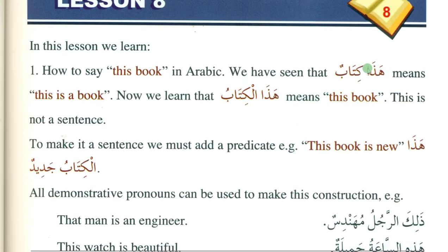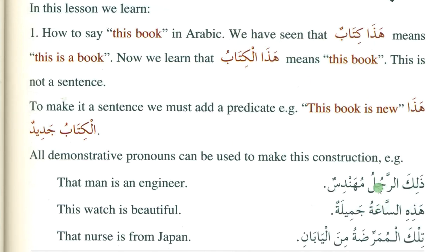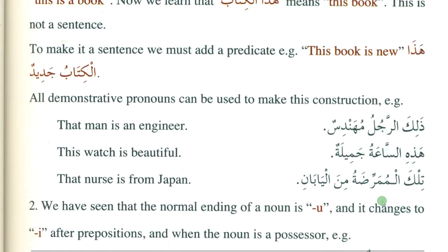In simple sentences like 'this is a book', these are nakira — indefinite. We use that type of construction for indefinite things, and we use the demonstrative pronoun with khabar construction for marifa — definite things.